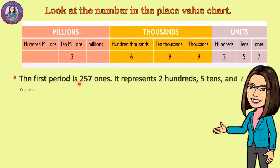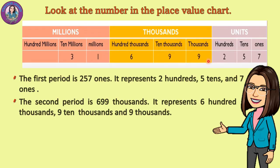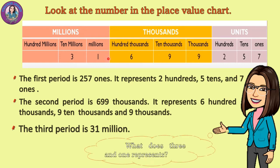The first period is 257 ones. It represents two hundreds, five tens, and seven ones. In the second period, we have six hundred ninety-nine thousands. This represents six hundred thousands, ten thousands, and nine thousands. In the third period, we have 31 million. Three represents thirty million, and one represents one million.